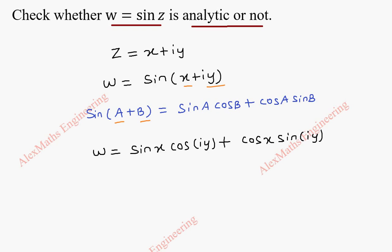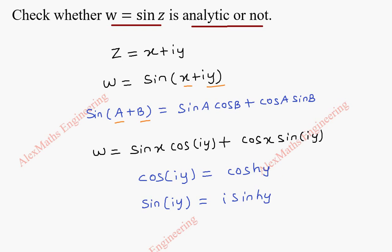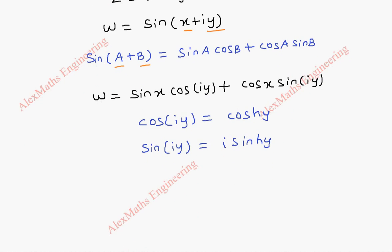Now, we have another set of formulas. When we have cos(i y), that is cosh(y), a hyperbolic function. In the same way, when we have sin(i y), this becomes i sinh(y). So we are going to use this formula here.